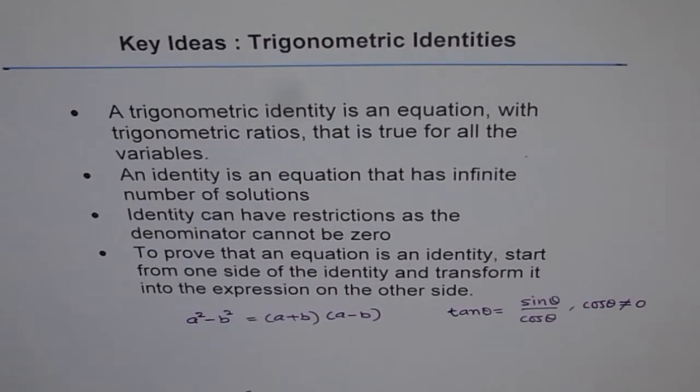The next point is: to prove that an equation is an identity, start from one side of the identity and transform it into the expression on the other side. That is the strategy which should be followed in proving trigonometric identities, and we will explore on this in the next video, which I am saying strategies to prove, how to prove one side equal to the other side.